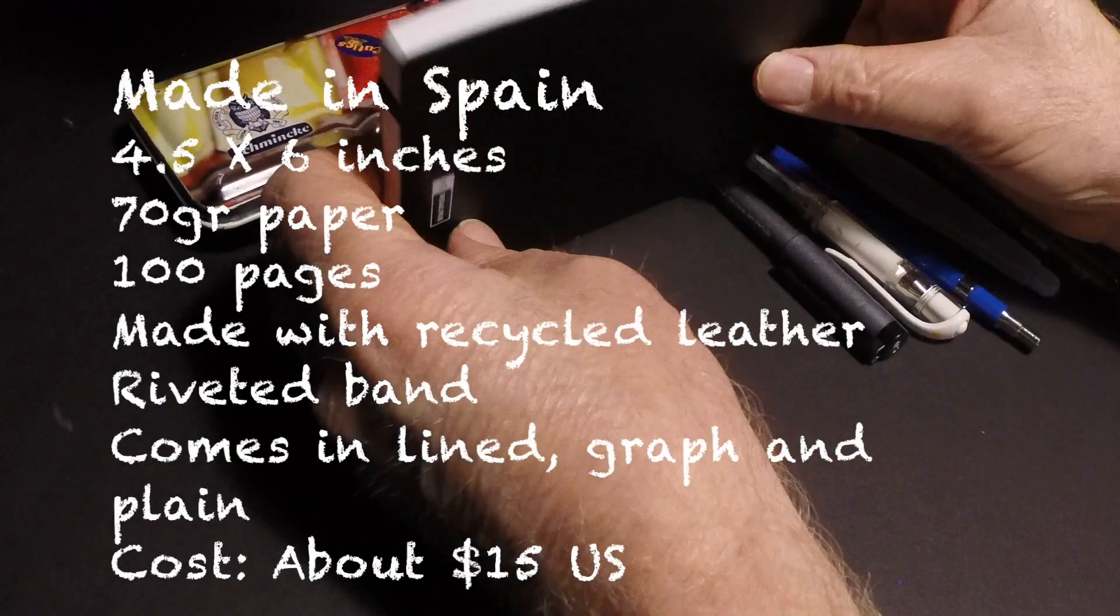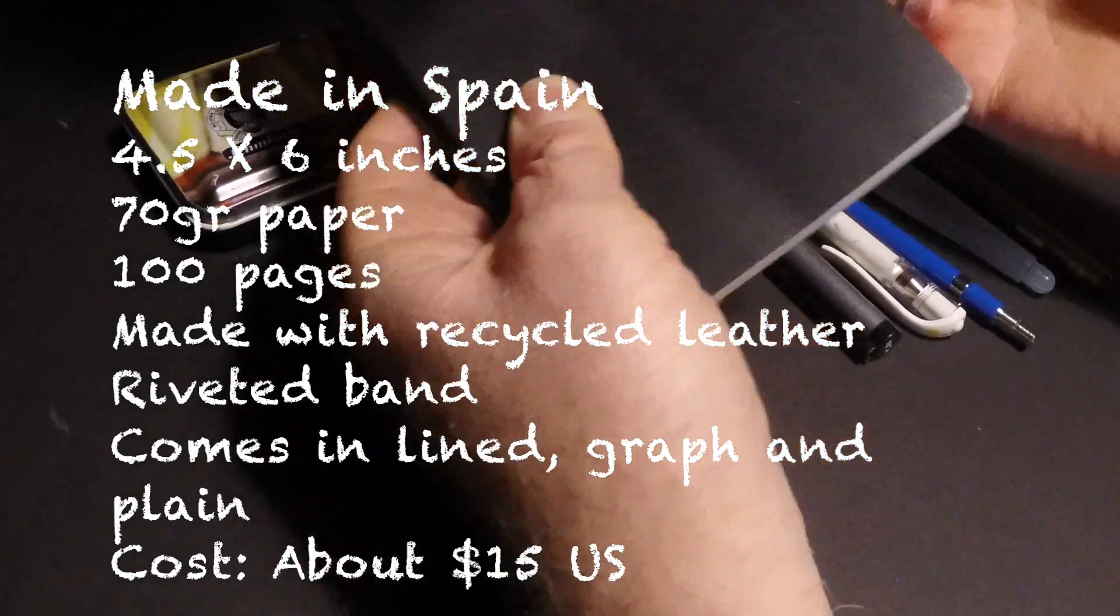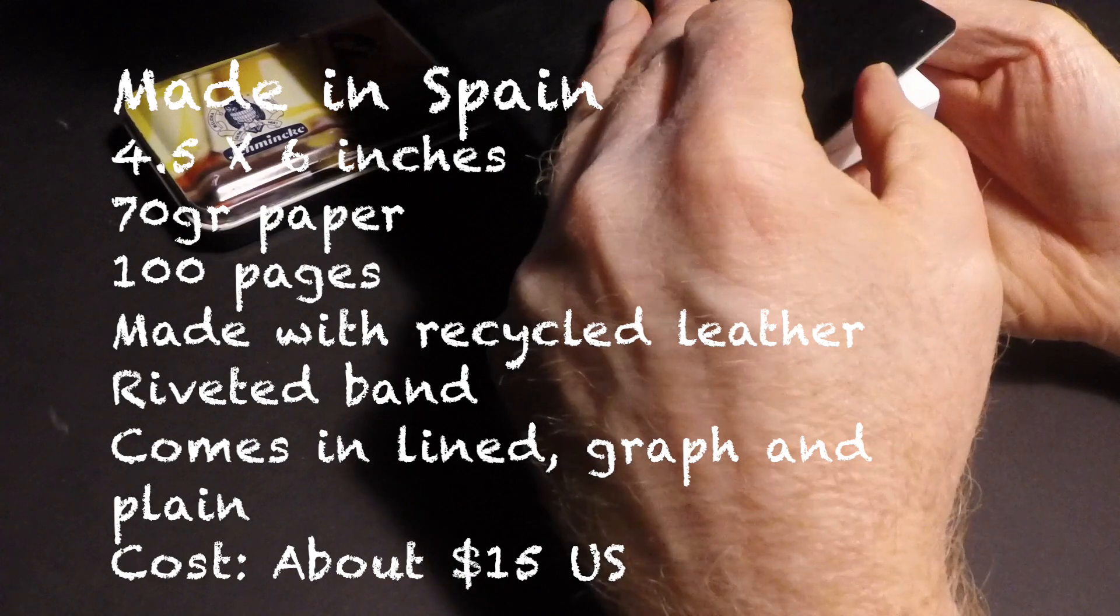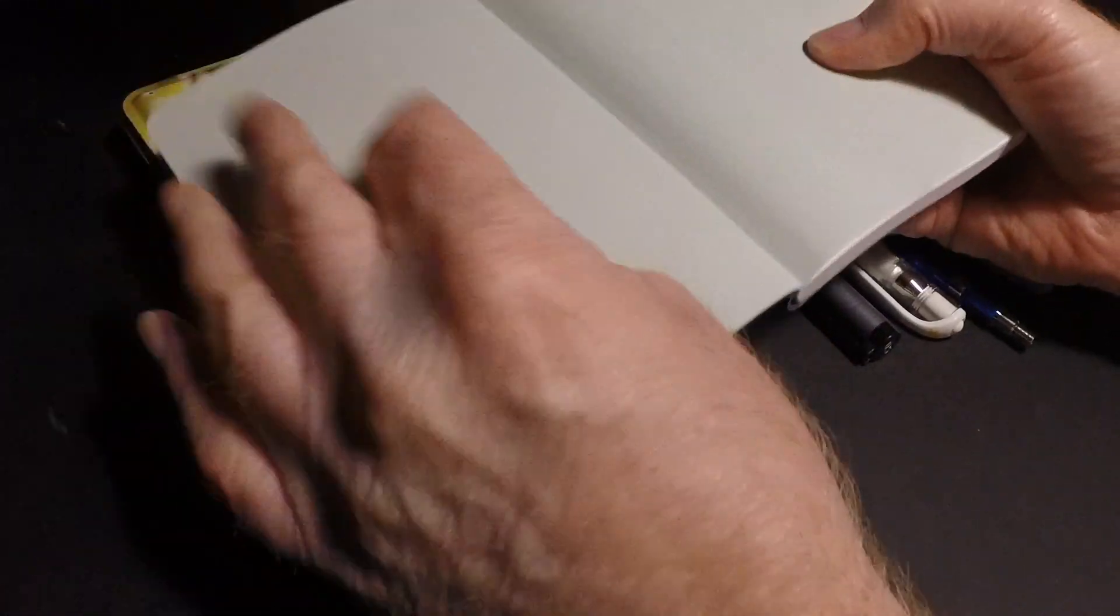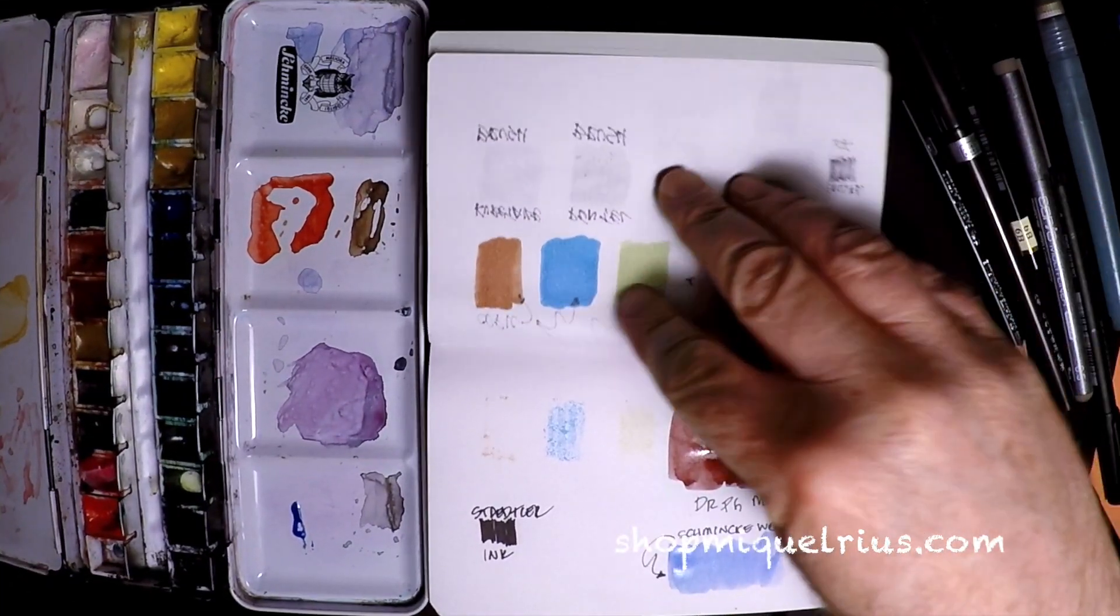What's cool about this journal is a few things. One, it's got a leather cover on it. It's made with recycled leather, so this is leather that would have gone to waste or ended up in a landfill and the folks in Spain reuse the leather for the cover. It's also got some really nice riveted strap in it, so that's really nice and you can tell that there was some quality put into this.